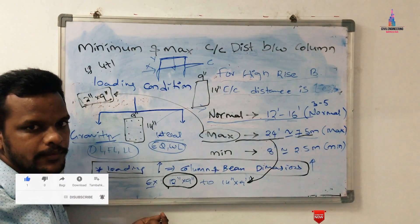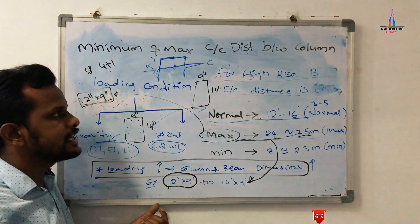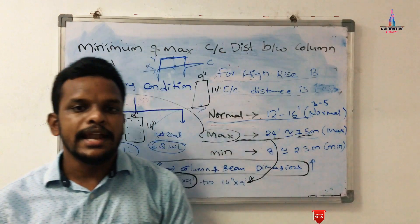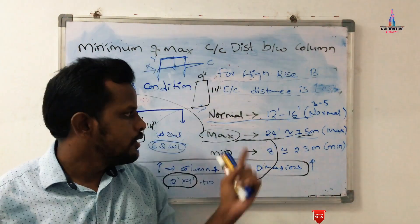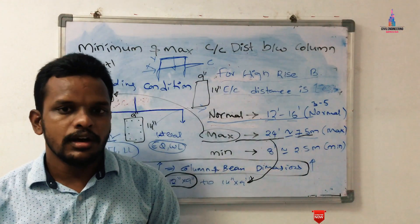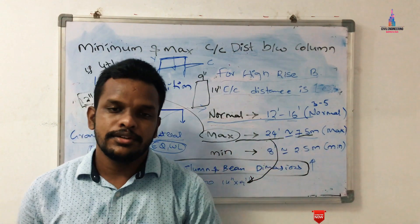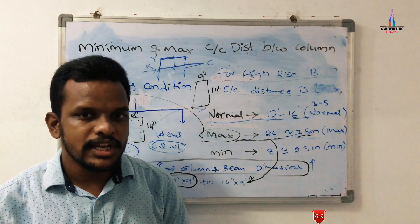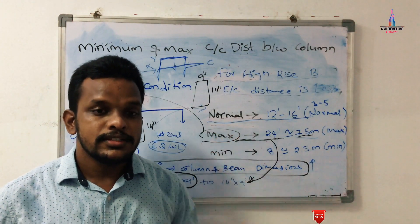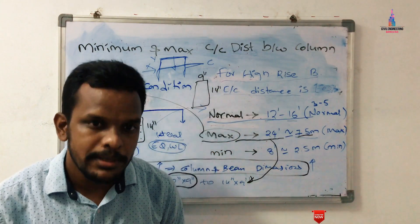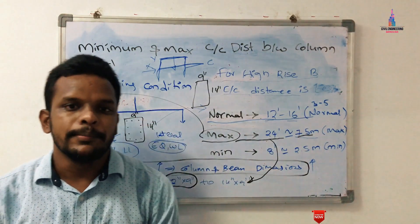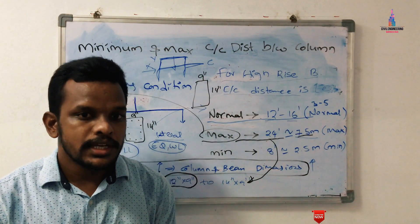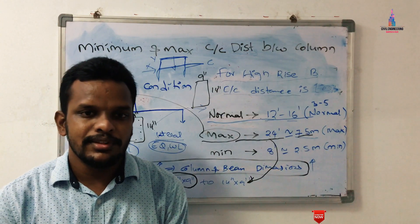This is the complete concept about maximum and minimum distance between columns for designing any kind of building. It depends on the loading condition — gravitational load and lateral loading. For normal conditions, take 12 feet to 16 feet; for maximum, take 24 feet; for minimum, take 8 feet. For high-rise buildings, the center-to-center distance between columns is less because the height is more. Please text your questions in the comment box below.